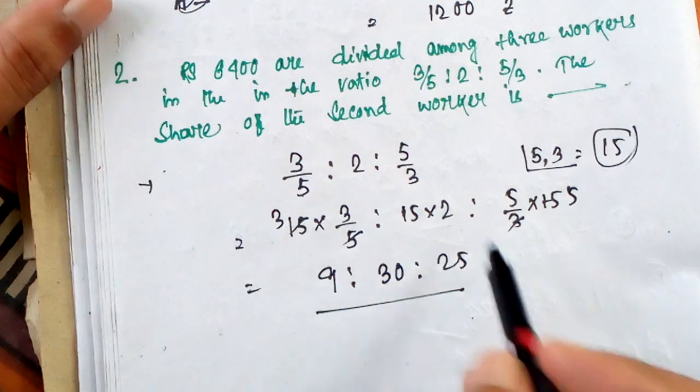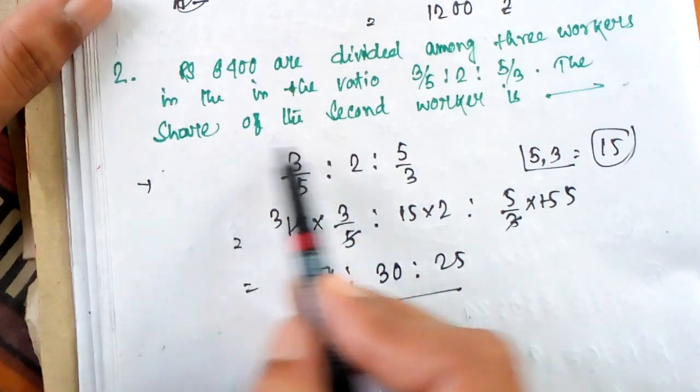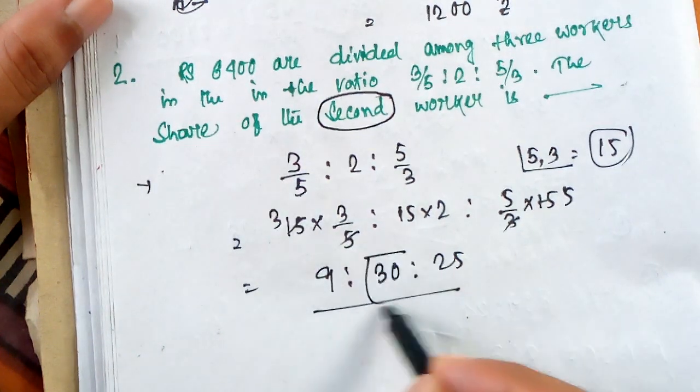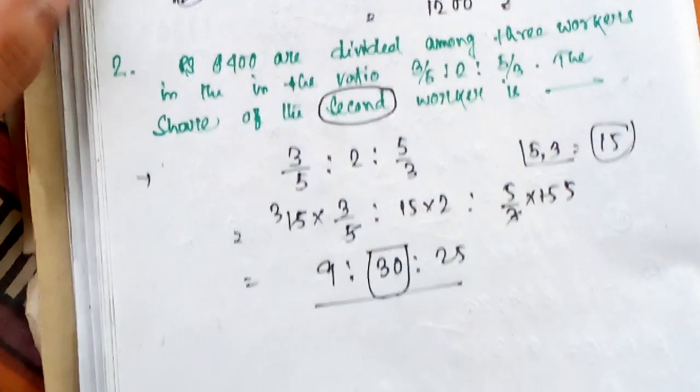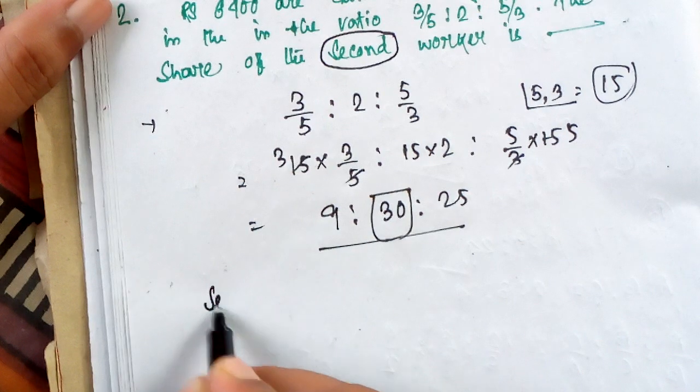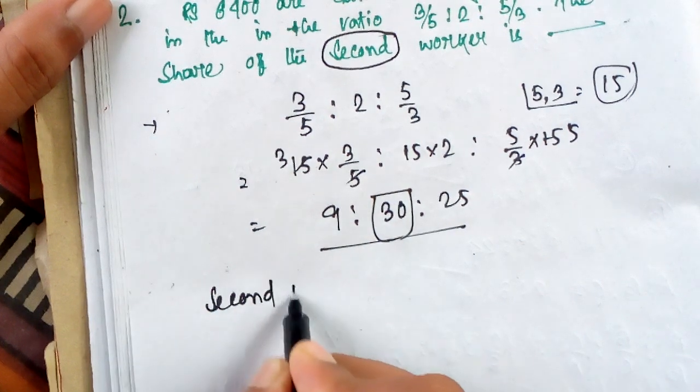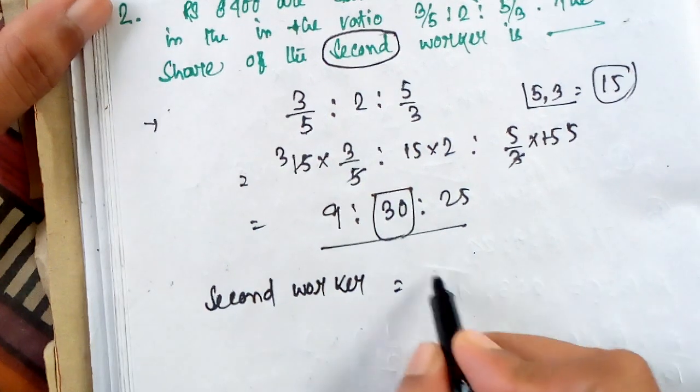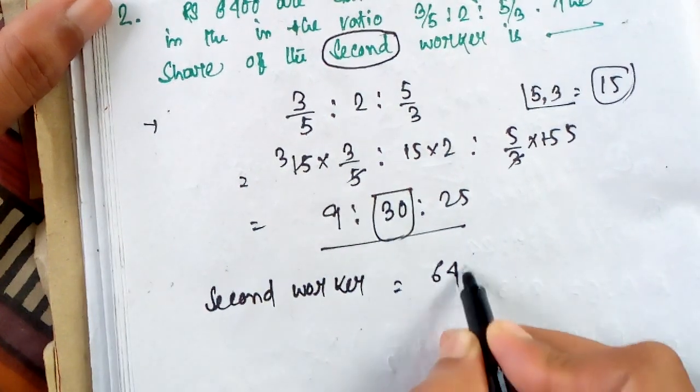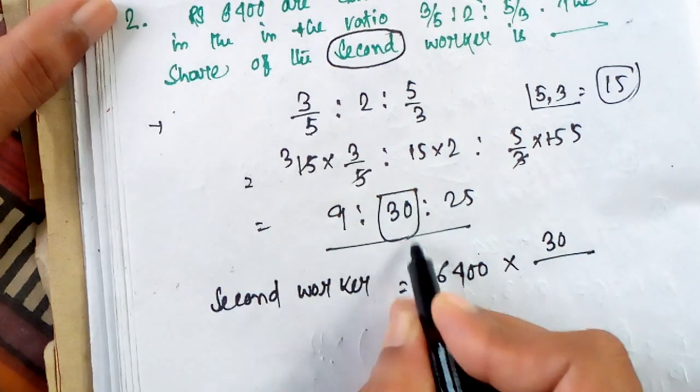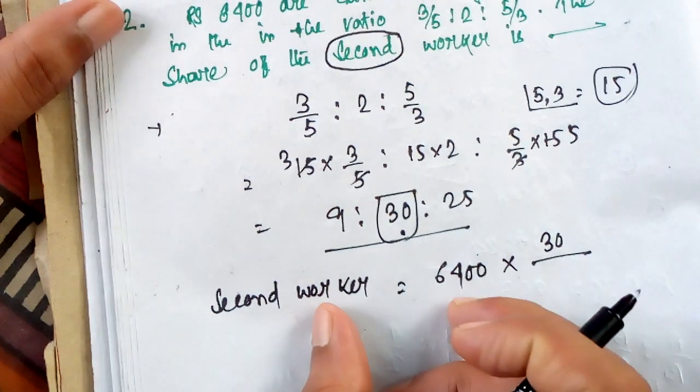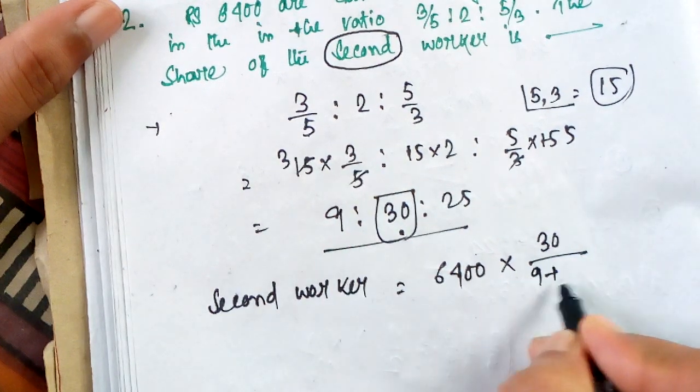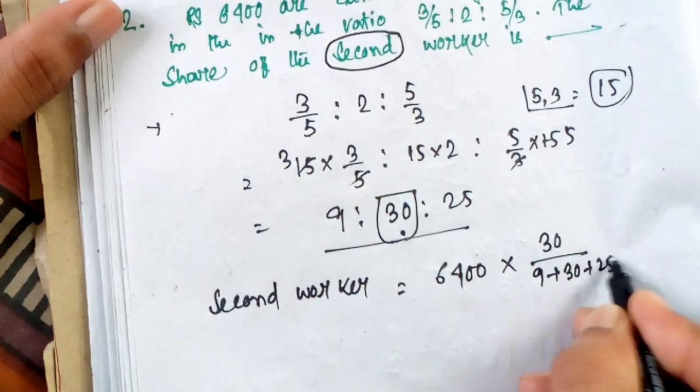And what will be the answer? The share of second worker. Who is second worker? Second worker is 30. Total amount is 6400 rupees. And second worker ratio is 30. The addition of whole ratio is 9 plus 30 plus 25.